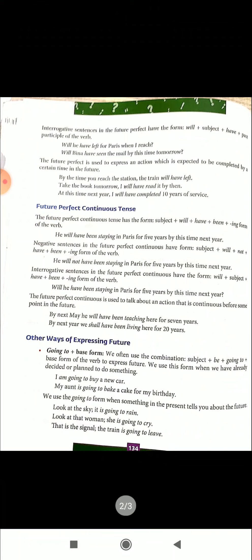Here, 'will he have left' — 'will have left' is the verb, so we put the subject after 'will.' The Future Perfect tense is used to express an action which is expected to be completed by a certain time in the future. That is, the action has not happened yet, but we are sure it will happen at a definite, specific time in the future.